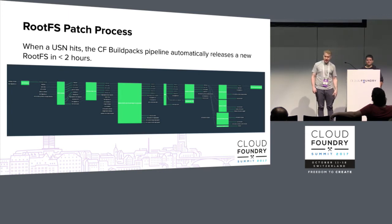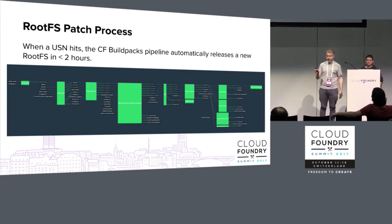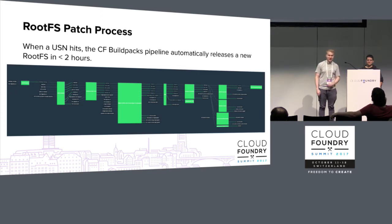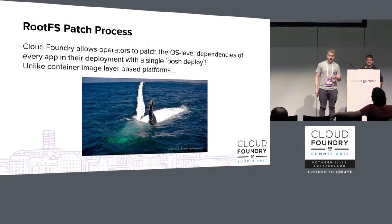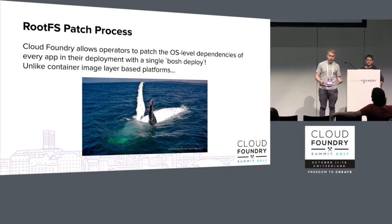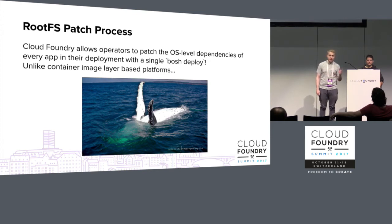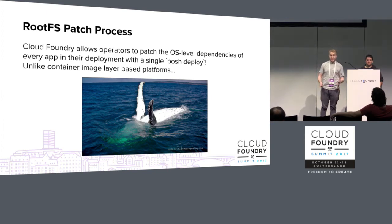The rootFS patch process is basically all automated. There's a pipeline that looks at the feed of USNs, and when it finds a new one, it starts building a new rootFS for Cloud Foundry. It goes through a bunch of steps validating dependencies and repackaging things so we have a rootFS that works on Docker, Cloud Foundry, and all these different places. It takes about two hours from when a USN hits to when our pipeline is finished and a Cloud Foundry operator can deploy it. There's only one manual step where I just say that looks good and it goes through. It's really important that this is fast because operators can take a new rootFS, upgrade it on their platform, and every single app's operating system level dependencies are suddenly up to date, live and in production — a major advantage over mutable container layers.